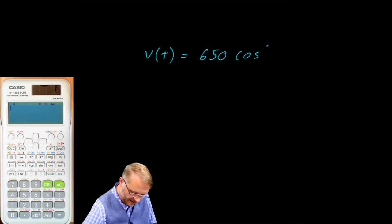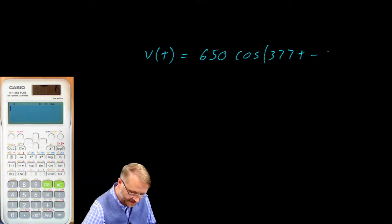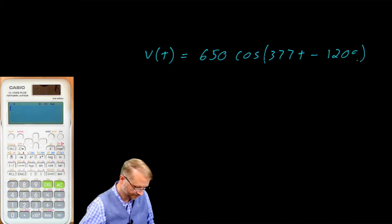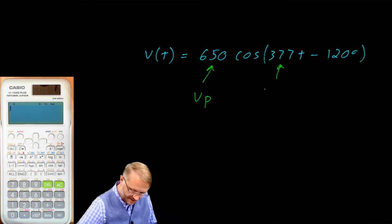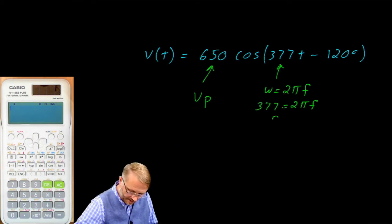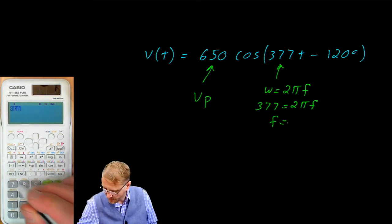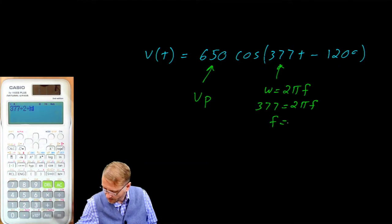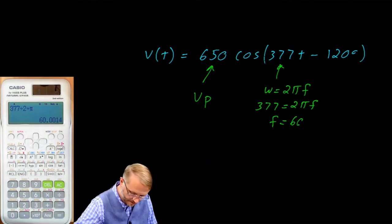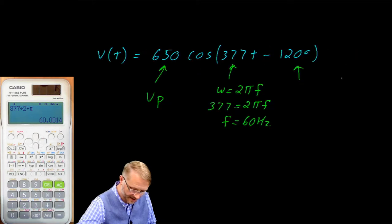Let voltage as a function of time equal 650 cosine of 377t minus 120 degrees. We identified this as a peak voltage. We said this was omega which is equal to 2 pi f. In this case 377 is equal to 2 pi f giving a frequency of 377 divided by 2 divided by pi of 60 hertz. And we said this was a phase shift.